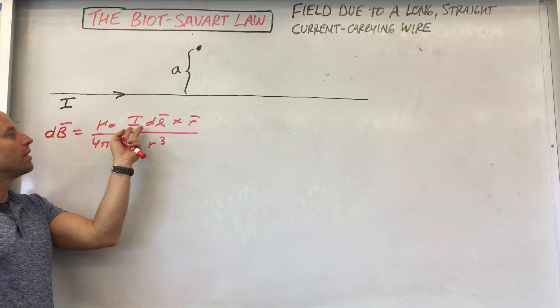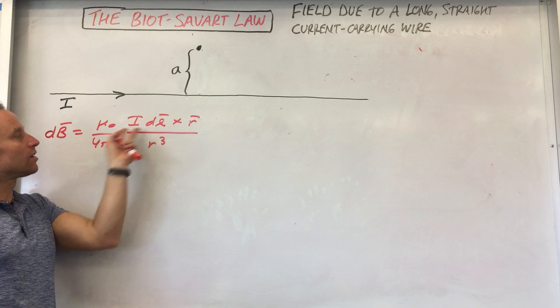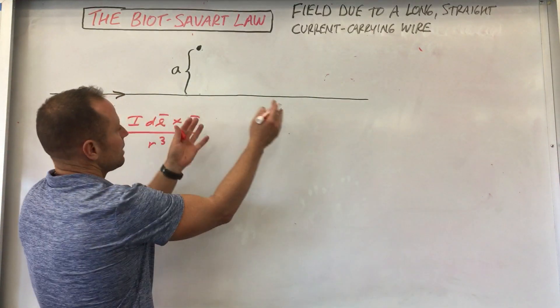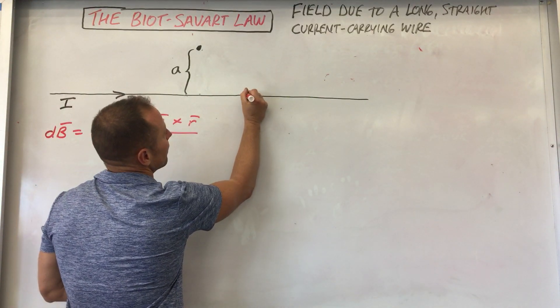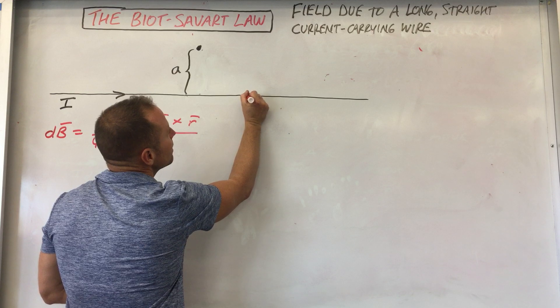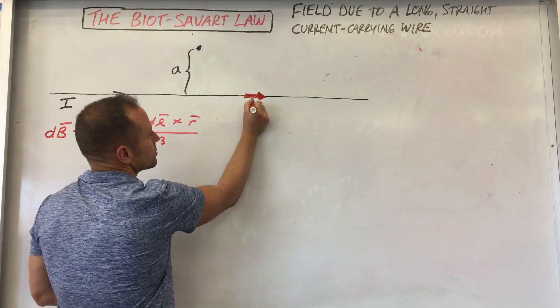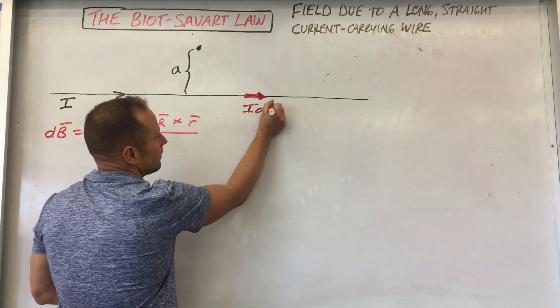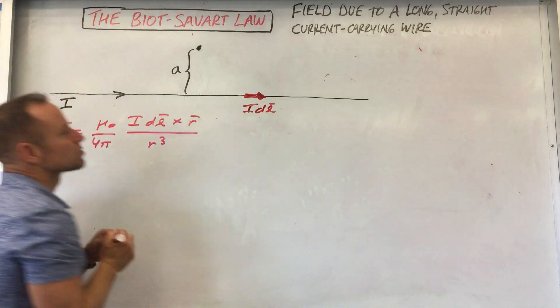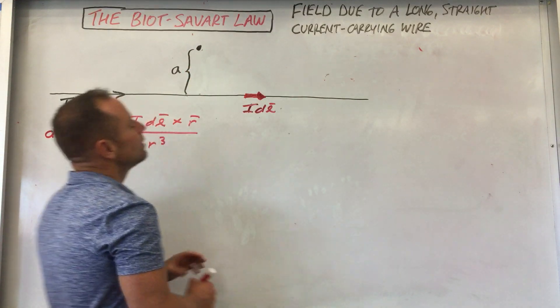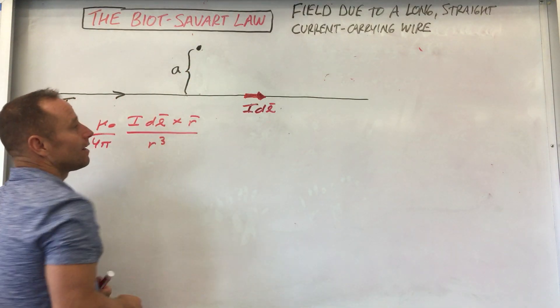Okay, so Idl's, these are little chunks of current that are causing the field in the first place. You could really pick anywhere along the wire. I'm gonna pick this little piece right here. So here's a little piece of the wire that's carrying current. So here's my little Idl. So here is one of the infinite little pieces of the wire that's gonna generate fields up here.